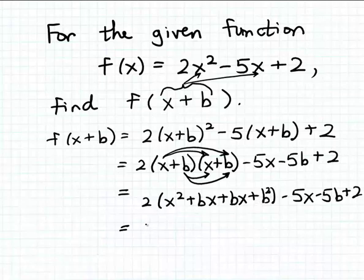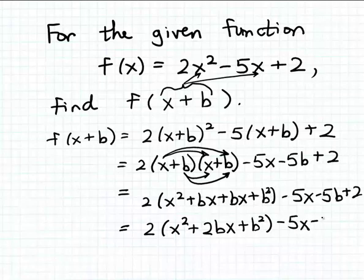Now let's multiply through here by the 2. Oh, before we do that, let's gather like terms inside the parentheses. These are similar terms. bx can add to itself. So we have x squared plus 2bx plus b squared and then minus 5x minus 5b plus 2.